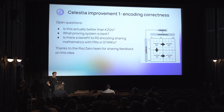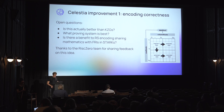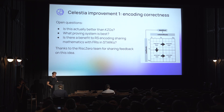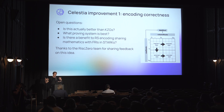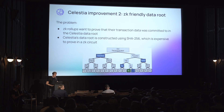Open questions include: is this actually better than KZG, will it be cheaper, will it be faster? We've talked a lot with the Risc Zero team, who know a lot about STARKs, and there could be a cool overlap because STARKs rely heavily on Reed-Solomon math to prove their validity, so there could be some interesting synergy there.